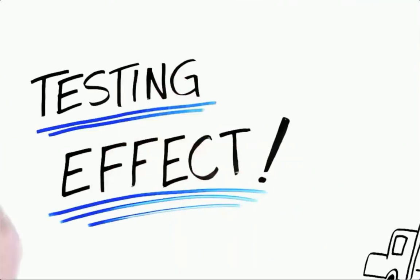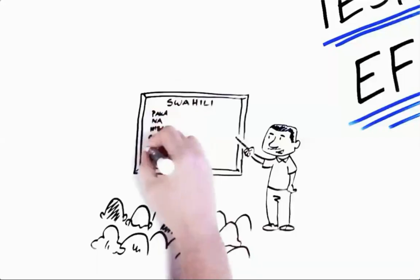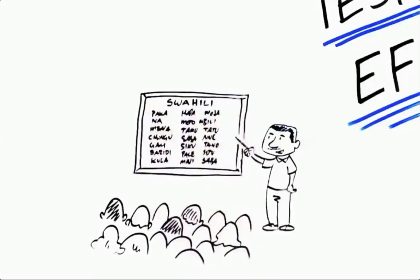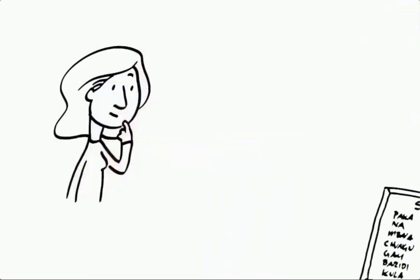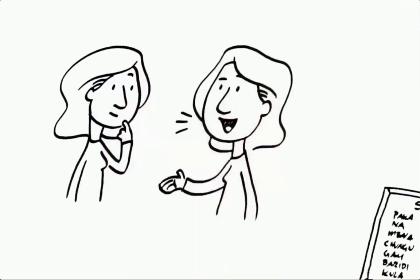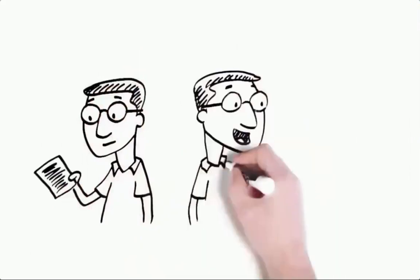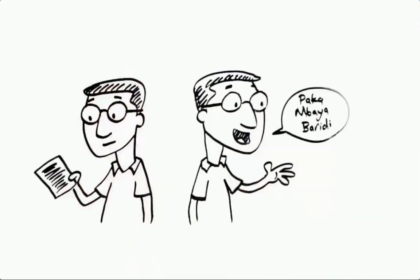In one experiment, Jeffrey Karpicke and Henry Roediger had students learn 40 Swahili words. Some kept re-studying the words, while others repeatedly tested themselves on the words — and those who tested themselves retained the words much better. The principle is that testing is not just a way to assess learning, it's also a way to improve learning. We learn and remember material best when we put it in our own words, rehearse it, and then retrieve it. That is the testing effect.